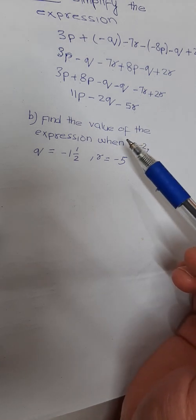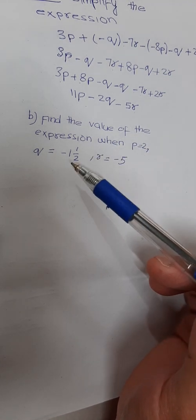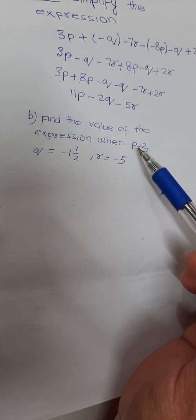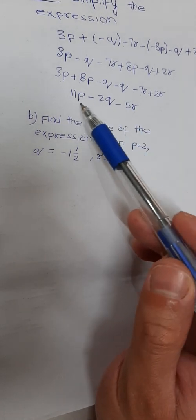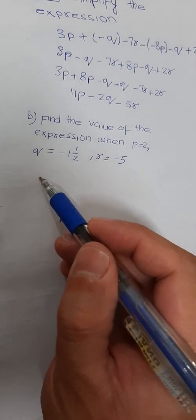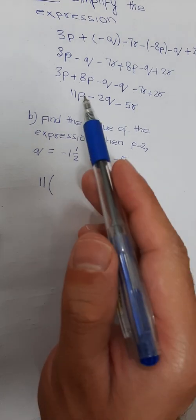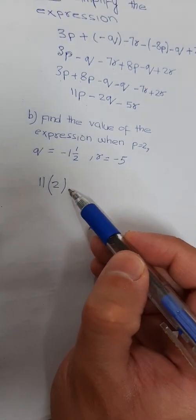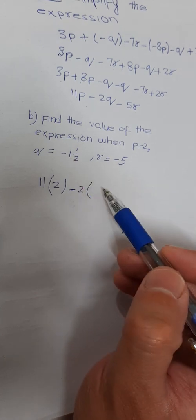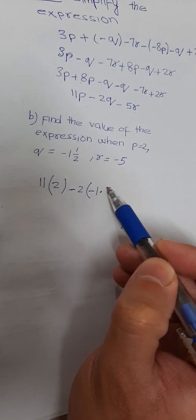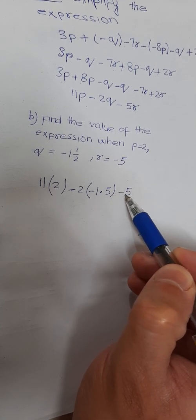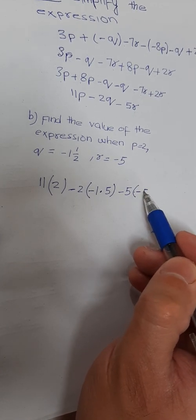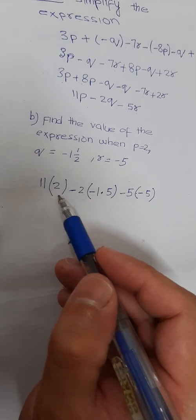In part b, find the value of the expression when P is 2, Q is minus 1 and a half (minus 1.5), and R is minus 5. Substitute into the simplified expression 11P minus 2Q minus 5R: put P = 2, Q = minus 1.5, R = minus 5. So 11 into 2 is 22.